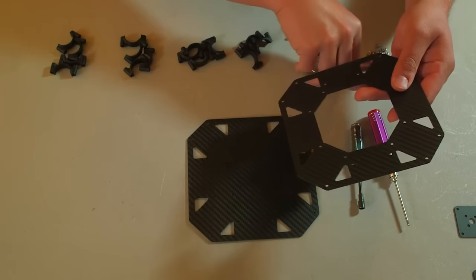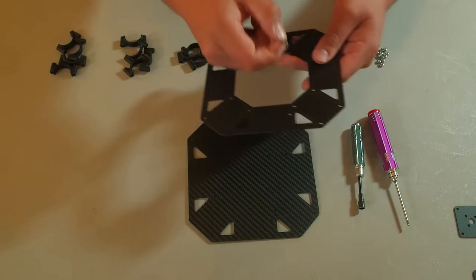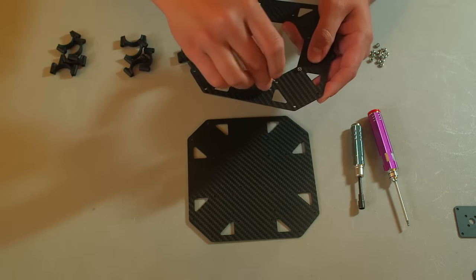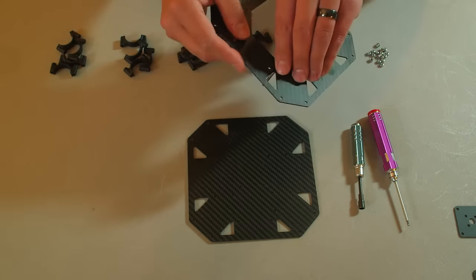Take two of the 40 millimeter screws and start in the center and work our way out. Makes assembly a little easier to do the inside clamps first.